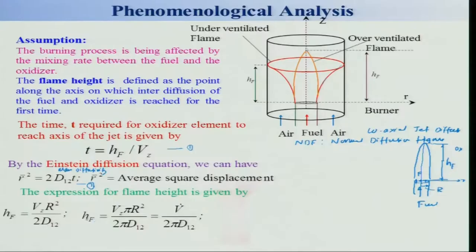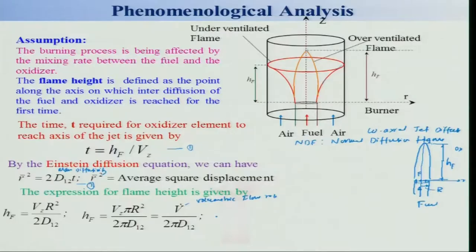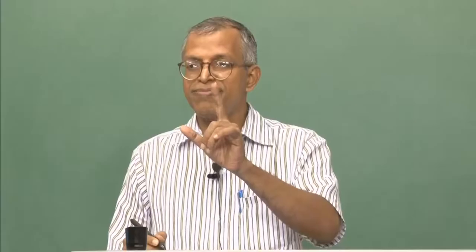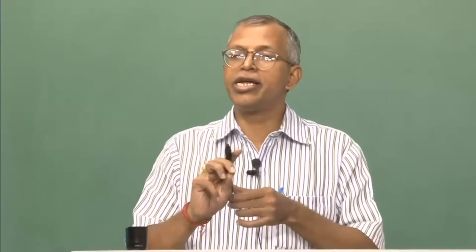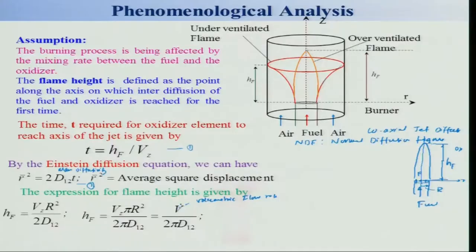So H_f is proportional to volumetric flow rate: as the volumetric flow rate of fuel increases, H_f increases. We can also express this using mass flow rate by multiplying numerator and denominator by ρ, giving ρ × v_dot as mass flow rate. Assuming Lewis number = 1 (i.e., α/D = 1), we can replace ρ D₁₂ with k_g / C_p. Thus H_f depends on mass flow rate, and k_g / C_p is independent of pressure, unlike diffusivity which is inversely proportional to pressure.